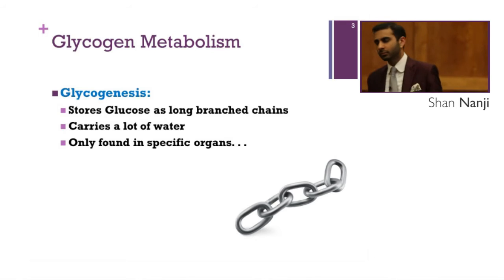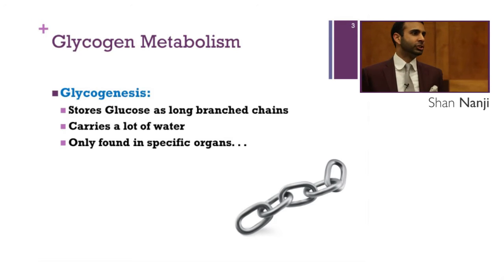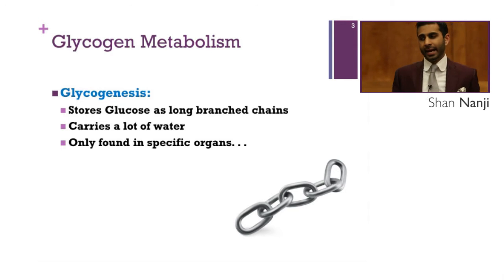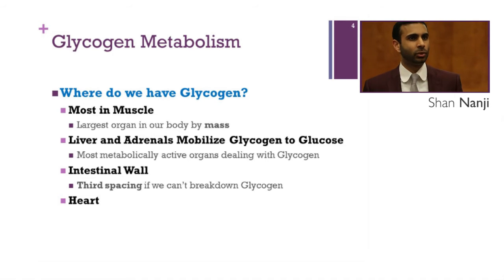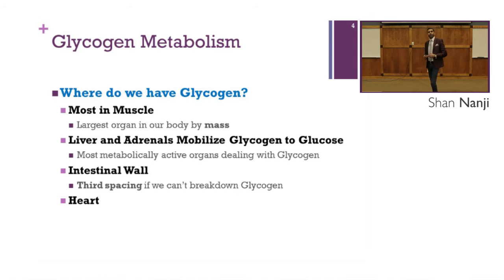Whether the body is building up stores or breaking down those stores for use as ATP, we will always go through things in this order. Thus, fat can't be built up without building glycogen and protein first, and fat can't be broken down without burning through glucose, glycogen, and protein. That's why fat is so hard to get rid of. Glycogenesis stores glucose as long chains and carries a lot of water with it. Most glycogen is in the muscle, which is the largest organ in our body by mass.